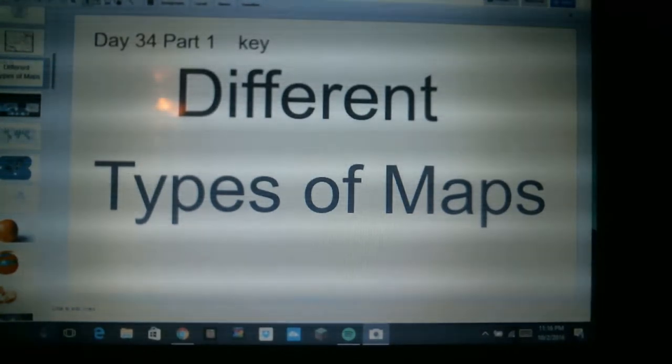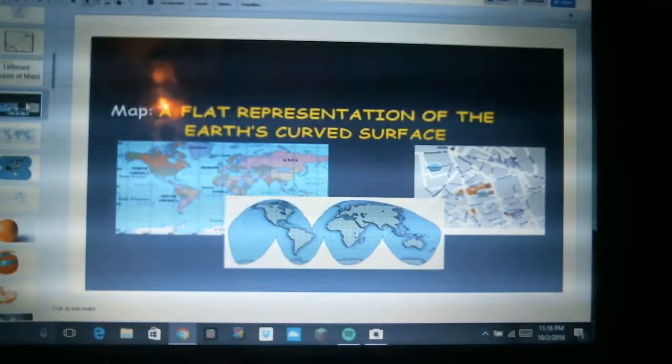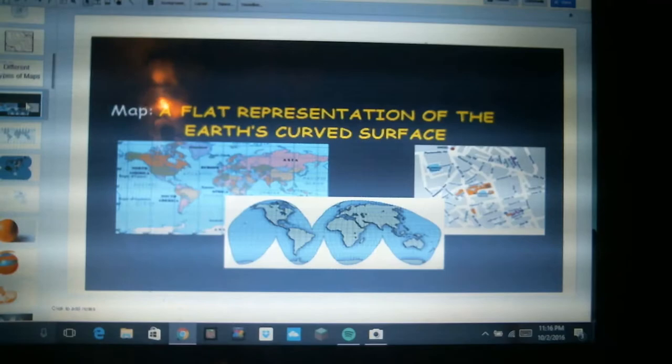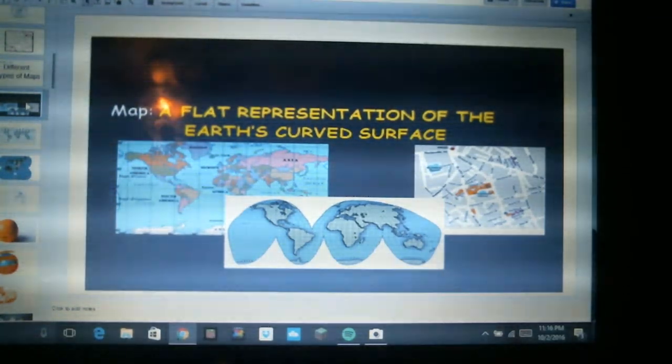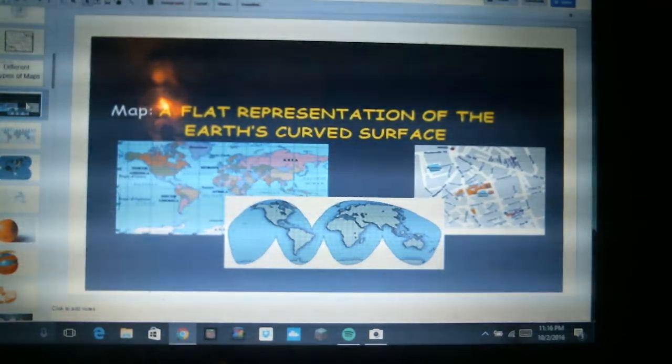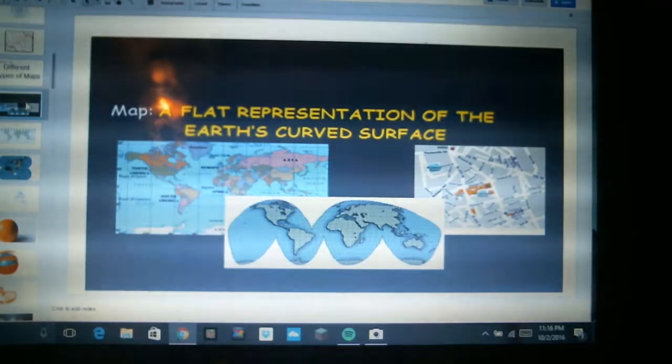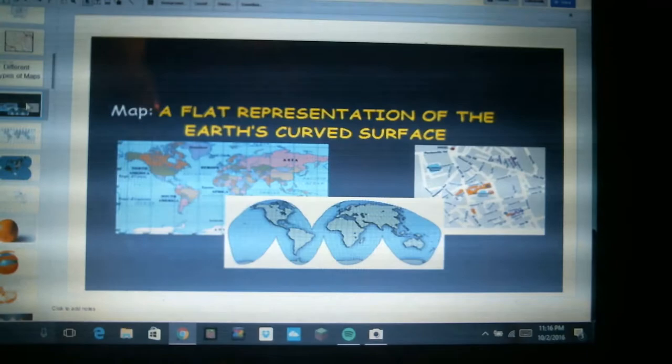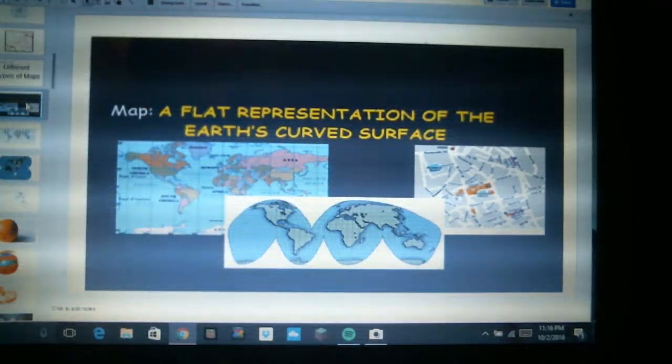Remember that a map is a flat representation of the Earth's curved surface. Earth is a round sphere, of course, and when we draw a map on a flat sheet of paper we end up having some difficulties drawing things accurately, especially at the north and south poles. The distances and the shapes of continents get to be really skewed when we try to draw the extreme north and south of a ball on a flat sheet of paper.